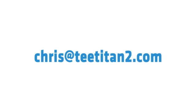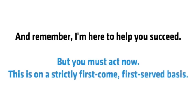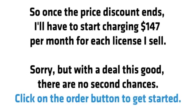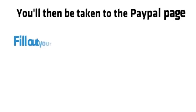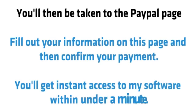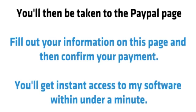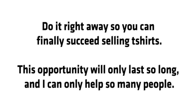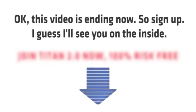I'll also include personal access to my email address in the members area. Remember, I'm here to help you succeed, but you must act now. This is on a strictly first-come, first-served basis. So once the price discount ends, I'll have to start charging $147 per month for each license I sell. With a deal this good, there are no second chances. Click on the order button to get started. You'll then be taken to the PayPal page — fill out your information and confirm your payment. You'll get instant access to my software within under a minute. Nothing could be simpler. Now is your chance. Do it right away so you can finally succeed selling t-shirts. This opportunity will only last so long and I can only help so many people. Sign up — I'll see you on the inside.